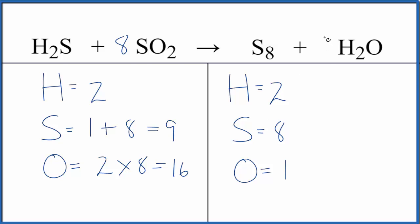I think I'm just going to put a 16 in front of the water because one times 16 will give me 16. And then hydrogens, two times 16, that'll give me 32. Looks like I'll have to put a 16 in front of the H2S, the hydrogen sulfide, because two times 16 will give me 32.